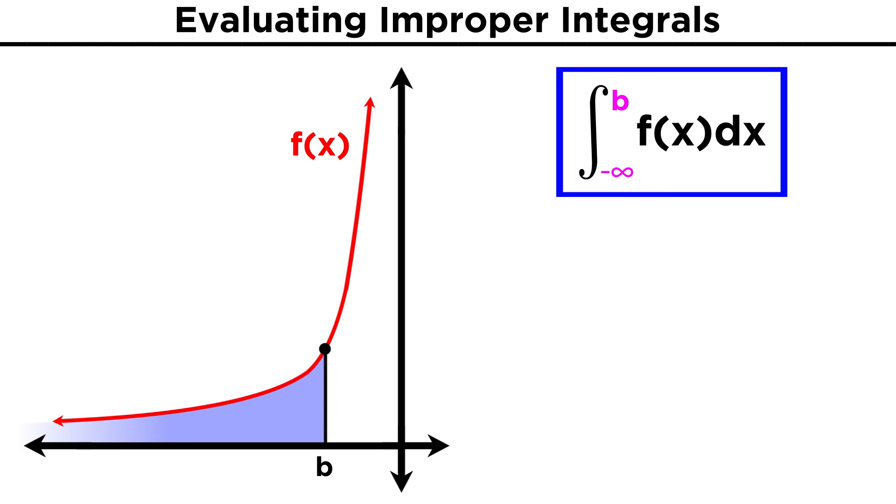This also works in the negative direction. If we are integrating from negative infinity to b, we just integrate from t to b and see what happens in the limit of t approaching negative infinity.